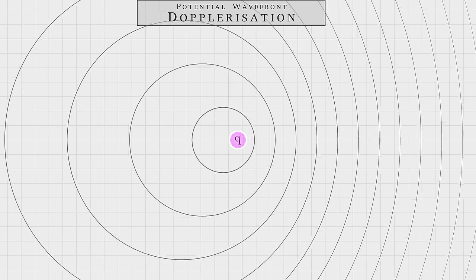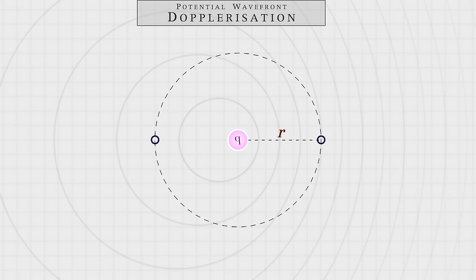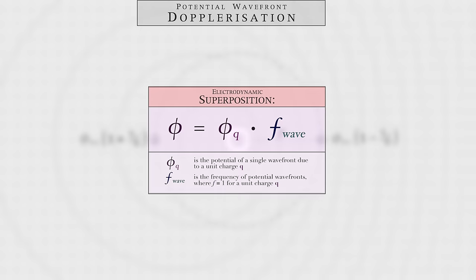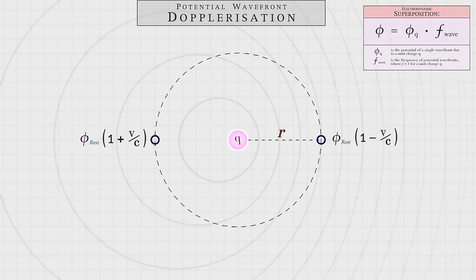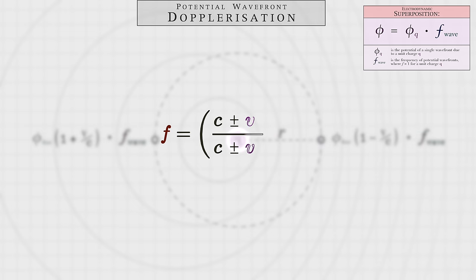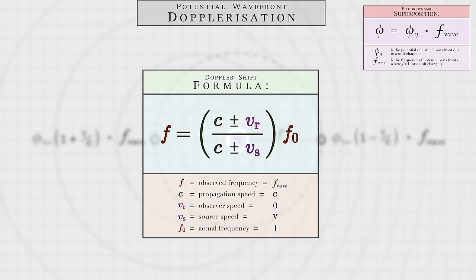So again, let's pick two points at a distance r out from the charge. Now, as we already know, wavefront retardation tells us that the potential of these points must be offset from the rest potential of a charge by the corresponding 1 minus V over C and 1 plus V over C factors. But now, we recognize that, according to the equation for wavefront superposition developed earlier, each of these potentials must now also be multiplied by the corresponding frequency of wavefronts at those positions. To calculate these frequency shifts, we can simply use the well-known Doppler formula.